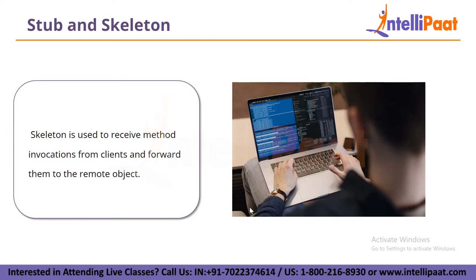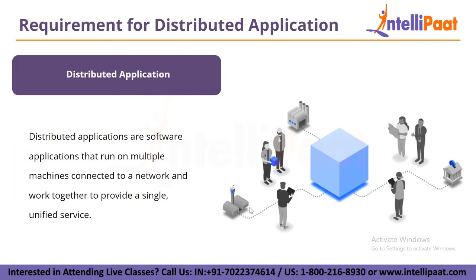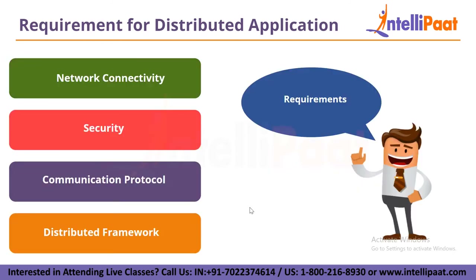In summary, stub and skeleton are the two key components of the Java RMI system that enable communication between client and server in a distributed environment. The stub acts as a proxy for the remote object and hides the communication details from the client, while the skeleton receives method invocations from the client and forwards them to the remote object. Together they provide a transparent communication mechanism. Now let's move forward and study requirements related to distributed applications.